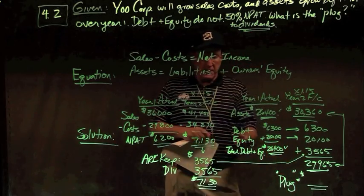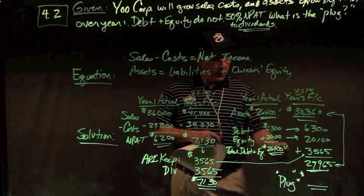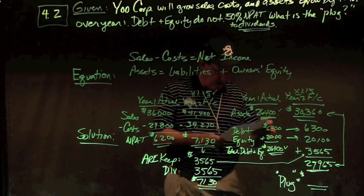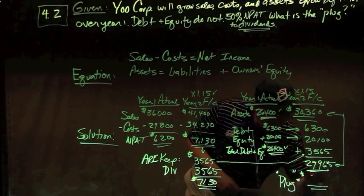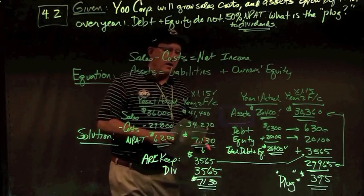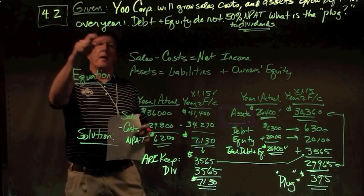I'm out of balance. So I must balance it, and what do I need to balance my $30,360 and my $29,965, but a plug of $395. There are your answers to problem 4.2.